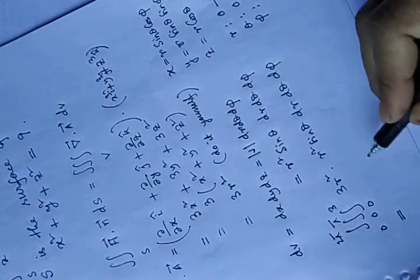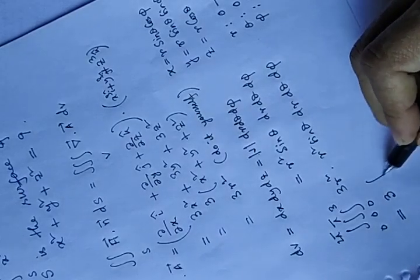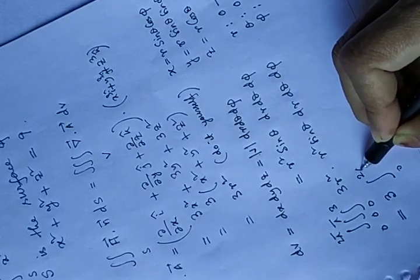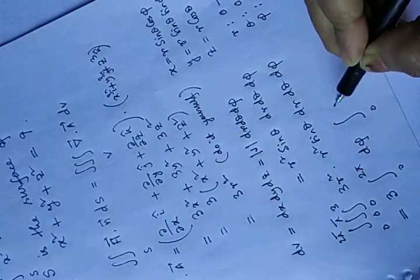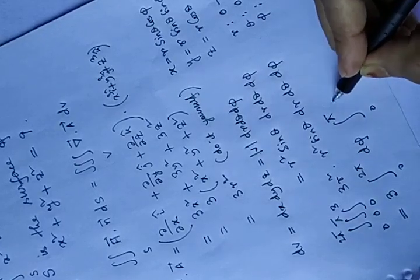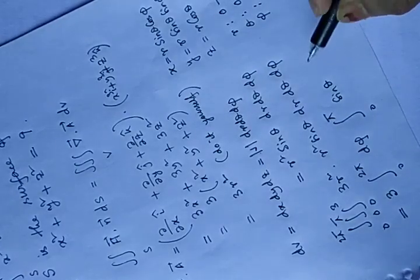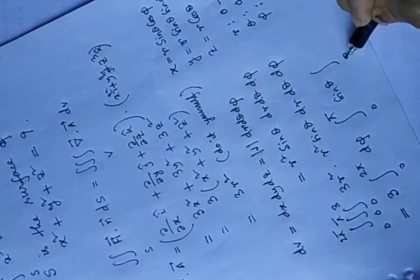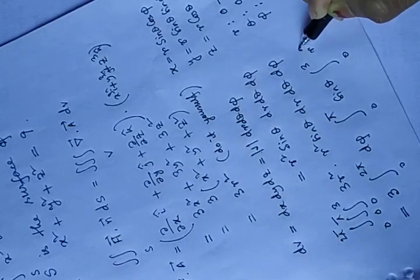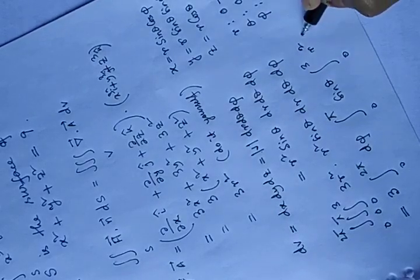So 3 is the constant term and the integral becomes: 0 to 2 pi d phi, 0 to pi sin theta d theta, and 0 to 3 r to the power 4 dr.